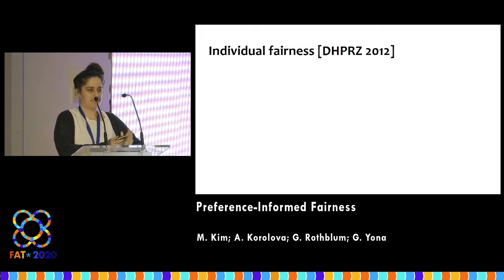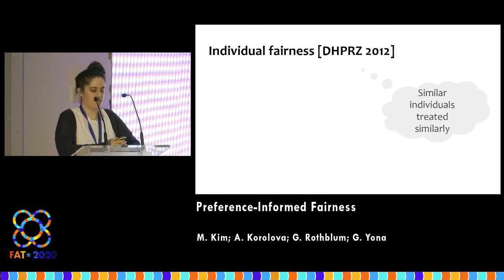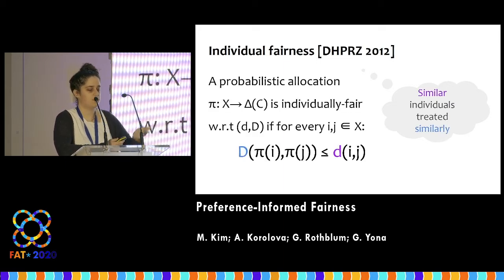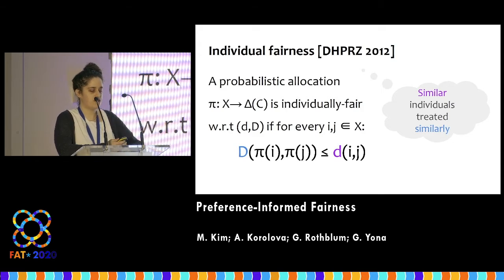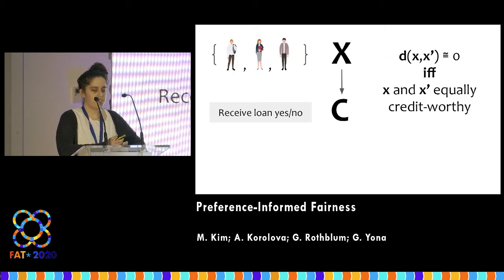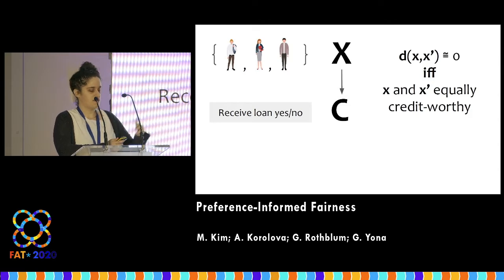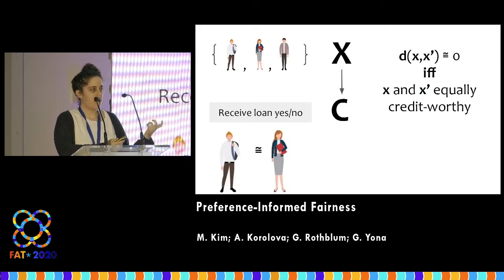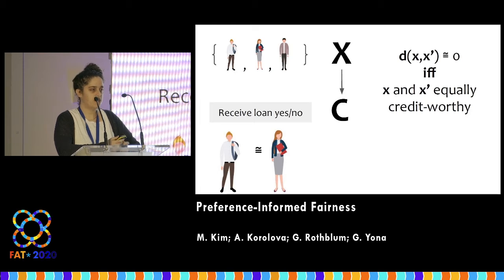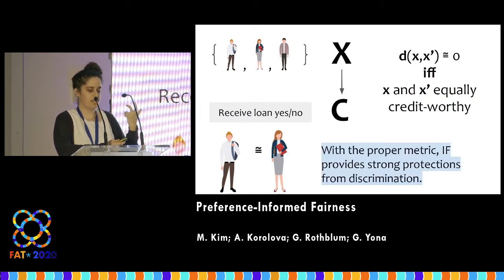We heard about individual fairness 20 minutes ago, but I'm going to assume you remember nothing. The idea is to formalize the notion that similar individuals are treated similarly. There are two notions of similarity here — between individuals and between outcomes. Formally, a randomized allocation is individually fair with respect to a two-metric if this upper bound holds for every individual i with respect to every other individual j. In the loan example, if two individuals are equally creditworthy, this constraint means they must receive the loan with equal probability — a very strong requirement that doesn't allow any bad distinction.